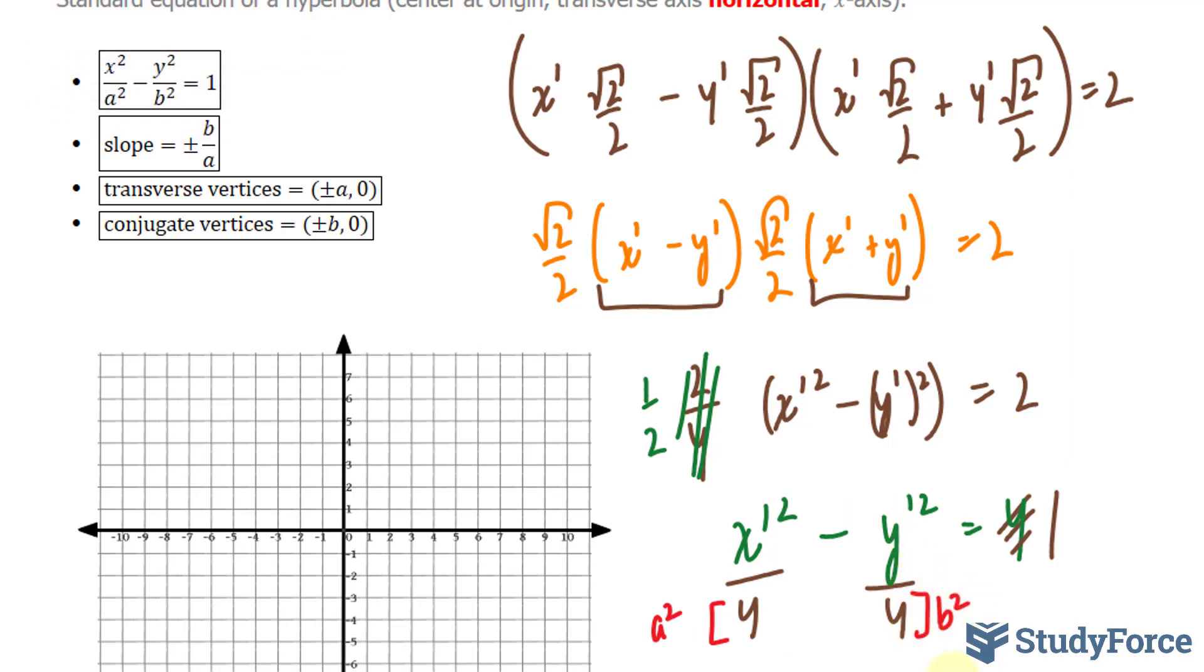So our a² number will be 4, and our b² number will be 4 as well. Taking the square root of each, we'll end up with a = ±2 and b = ±2.